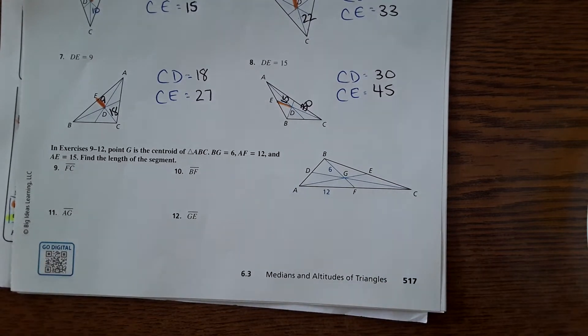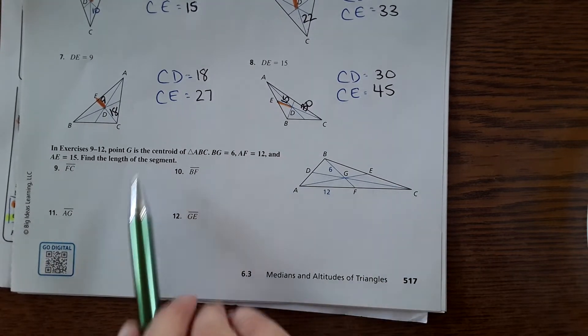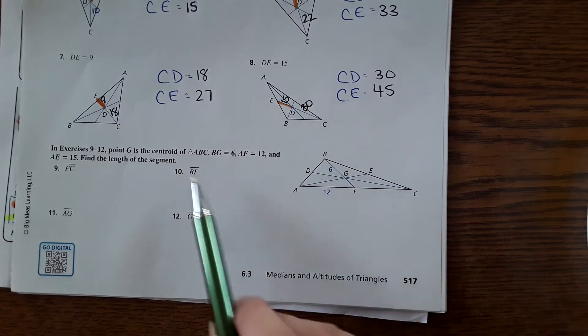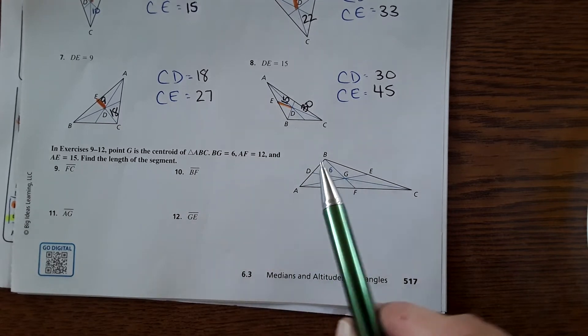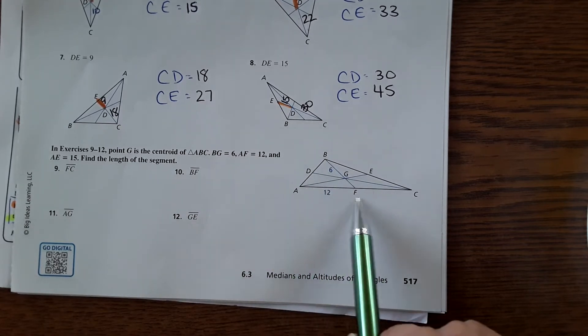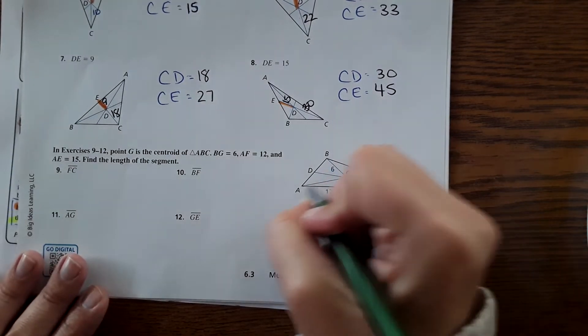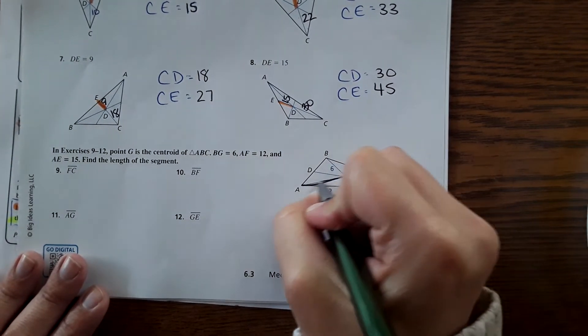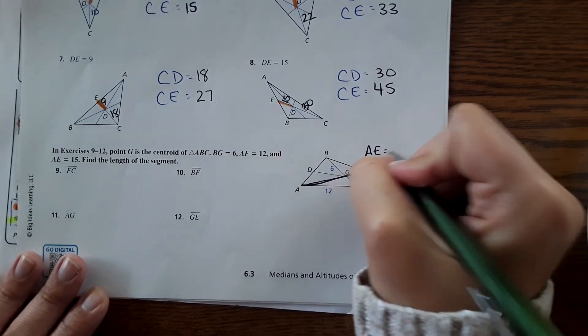Okay, so here again, same thing, just a little bit different setup. G is a little bit different. So here is now the centroid. It says BG is 6—they already labeled that for us, which is nice. AF is 12 and AE is 15. They didn't label AE. AE is 15.